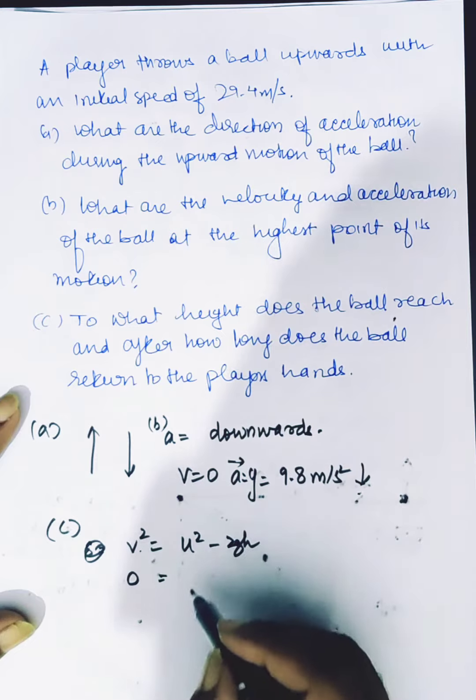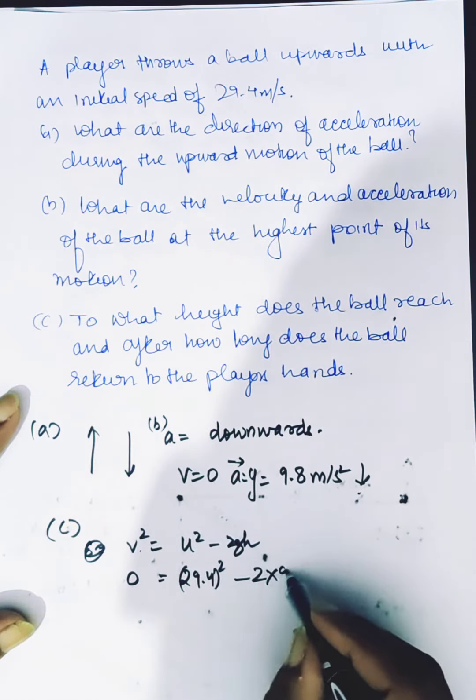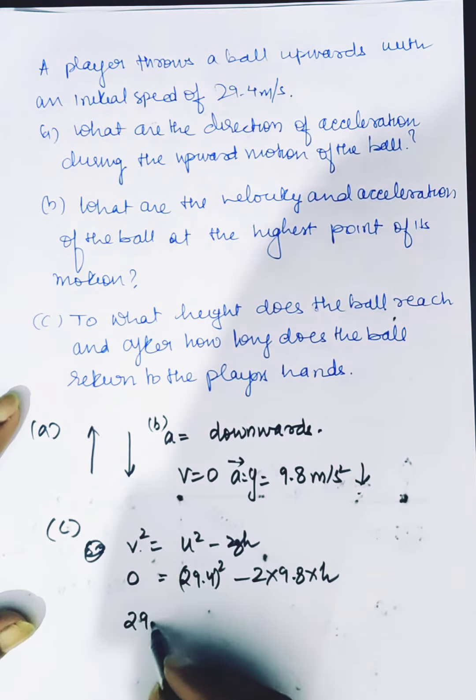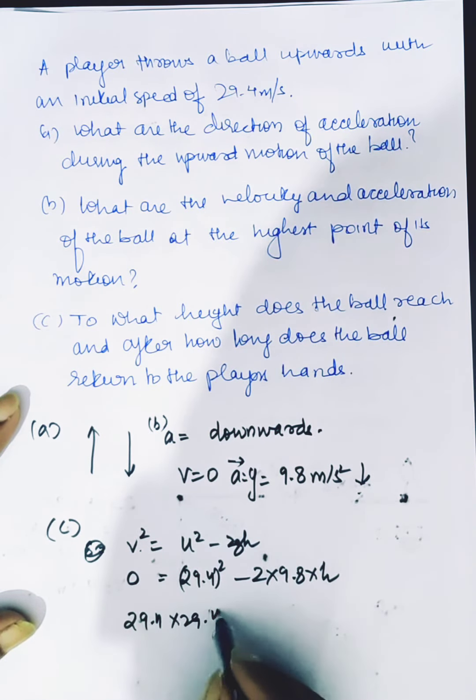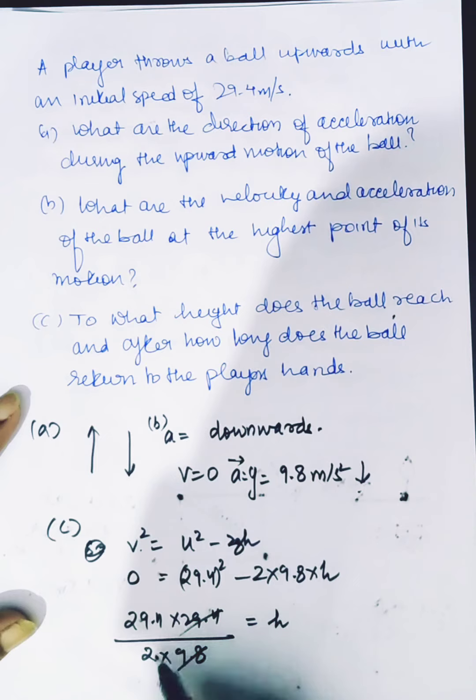0 = 29.4² - 2 × 9.8 × h. So 29.4 × 29.4 divided by 2 × 9.8 gives us h. From the table, 9.8 × 29.4 gives us 3 times. This is 14.7.